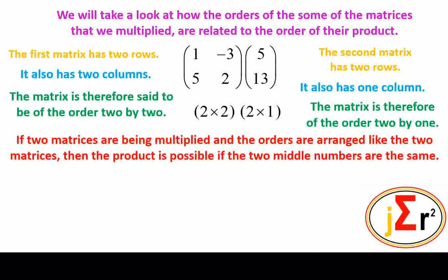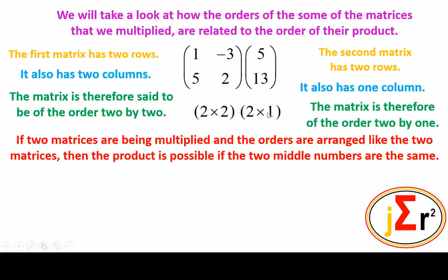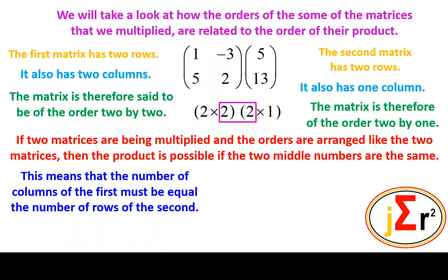If two matrices are being multiplied and the orders are arranged like the two matrices, then the product is possible only if the two middle numbers are the same. Here we have two matrices to be multiplied. If we arrange the orders in the same way, the matrix product is only possible if the two middle numbers are the same — meaning the number of columns of the first must equal the number of rows of the second.